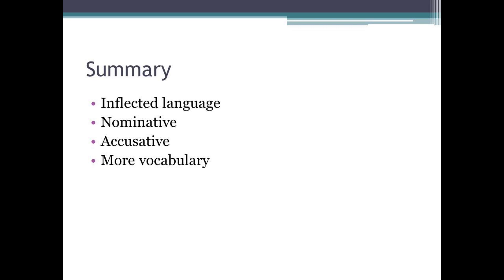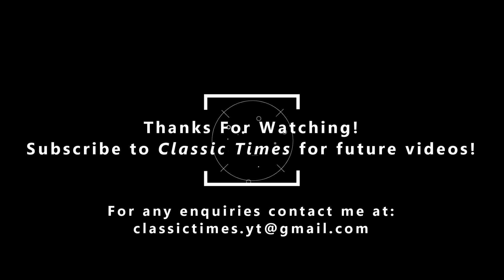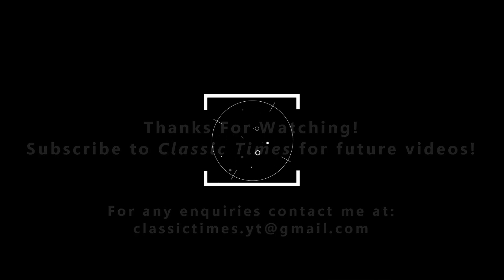OK, so we've now covered Stage 2 of the Cambridge Latin course. Let's have a quick summary. Latin is an inflected language where the endings of words change to change the meaning. The Nominative case is the subject of the sentence. The Accusative case is the object of the sentence. And finally, you've been introduced to a few more words. Join me in the next video where I will be covering Stage 3 of the Cambridge Latin course. I'll see you in the next video.